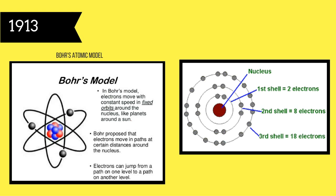This model of Bohr's idea of the atomic structure shows how it works. The nucleus lies in the center of the model and is made up of a certain number of protons and neutrons. Each of the outer layers is made up of a certain amount of electrons, and the limit to how many electrons can be in each electron shell is shown in the model. This model helps not only with the theoretical appearance of an atom, but also how different elements combine.